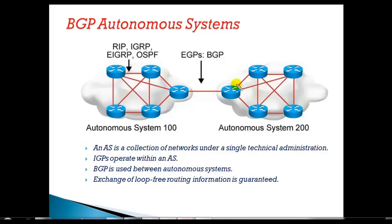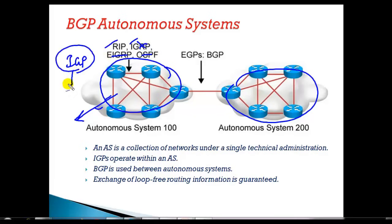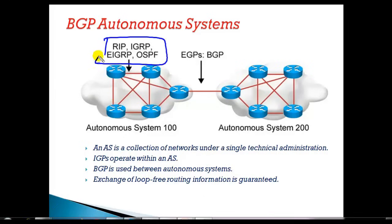We can have multiple autonomous system numbers. If you want to communicate within the same autonomous system number or within the same organization, we generally use IGP protocols — RIP, RIPv2, IGRP (no longer used), EIGRP, OSPF, IS-IS. These all operate within the same autonomous system number. If you want to communicate between two or more different autonomous system numbers, we use an exterior gateway routing protocol.